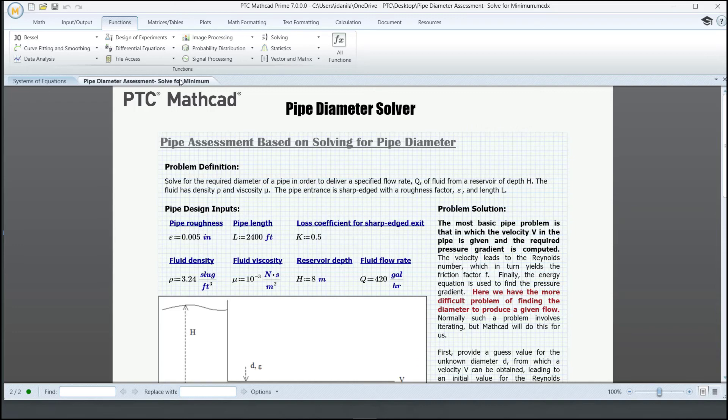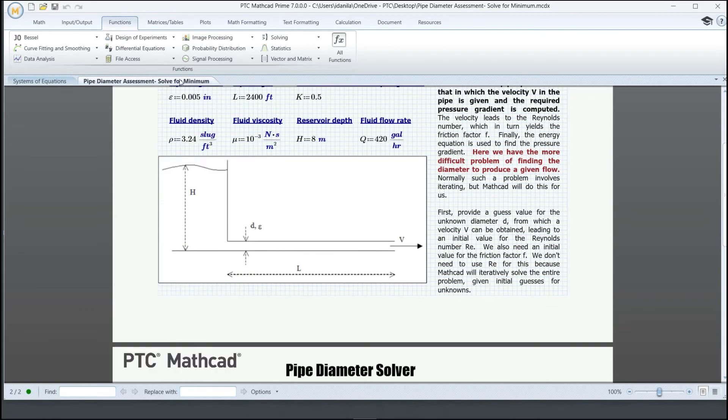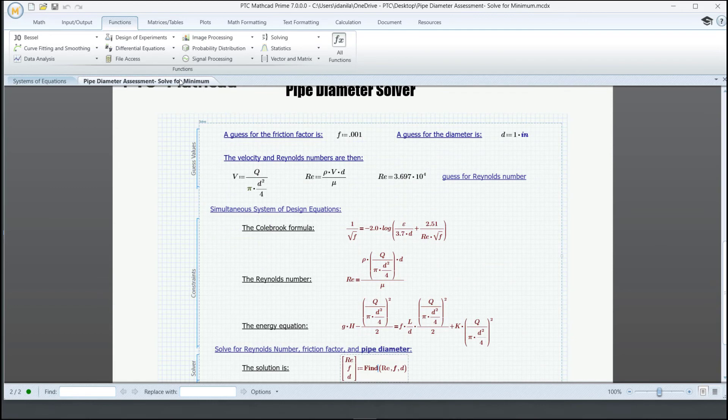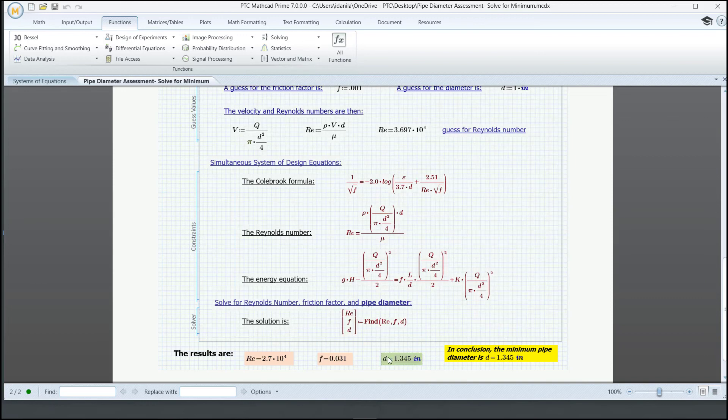What we want to find is the necessary diameter for the pipe to produce a given flow. In the SolveBlock, the guess values and formulas have been inserted just like we did in the previous example. And then, the solution has been found by also using the Find function.